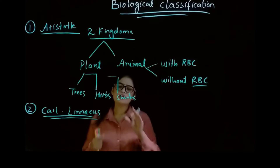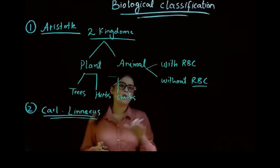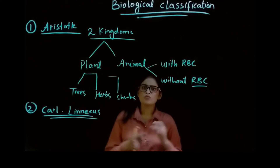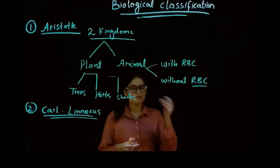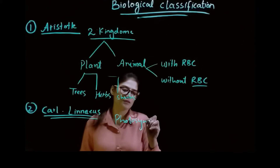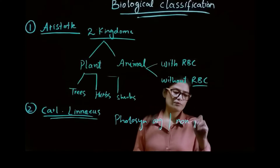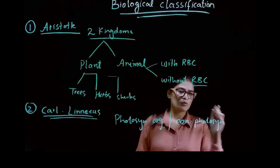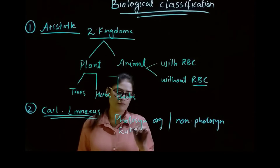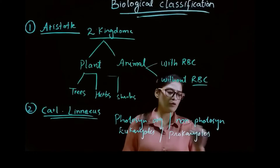According to Linnaeus, there are two kingdoms: one is Plantae and the other is Animalia. All the trees, herbs, and shrubs are included in kingdom Plantae, while the animals with RBC and without RBC are included in kingdom Animalia. The question is still the same — what about the other organisms? For example, what about photosynthetic or non-photosynthetic organisms, and what about eukaryotes and prokaryotes?